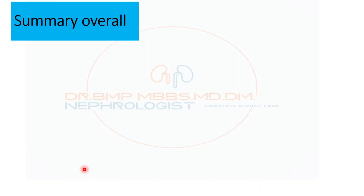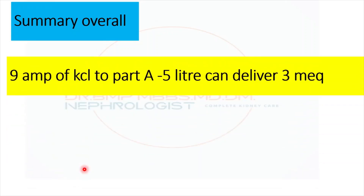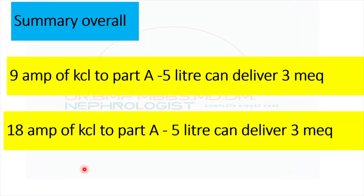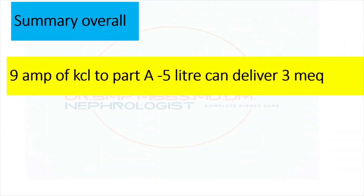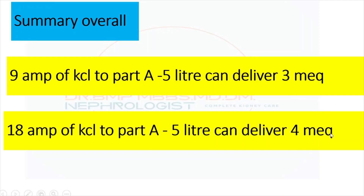The overall summary is: if the patient has hypokalemia and you want to start dialysis, use a 5-liter Part A can. Add 9 ampoules of KCl to the 5-liter Part A can — it delivers 3 milliequivalents of potassium in the final dialysate. Add 18 ampoules of KCl to the 5-liter Part A can — it delivers around 4 milliequivalents in the final dialysate. This is the overall summary of this calculation, and notably, this is not clearly mentioned in any book.